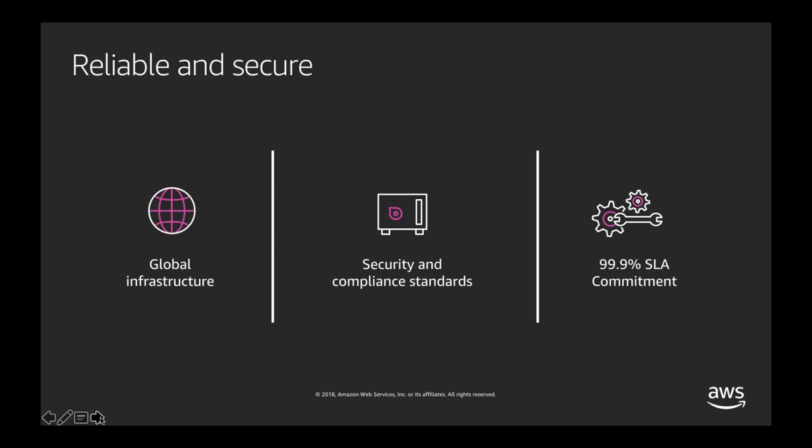From a reliability and security perspective, AWS end-user computing services are globally available in 14 regions today, out of 22 total regions. These services meet multiple security and compliance standards, including FERPA, HIPAA, PCI, FedRAMP, GDPR, and more. Each of these services also comes with a service level agreement commitment of 99.9% SLA.